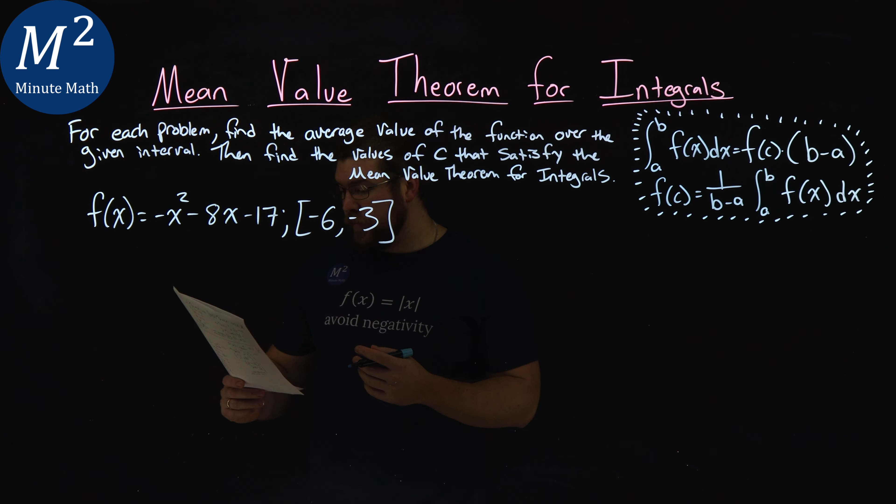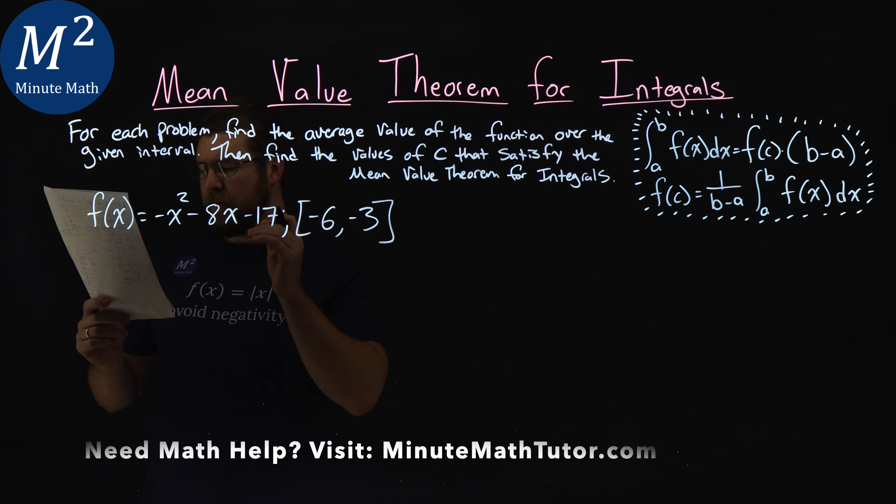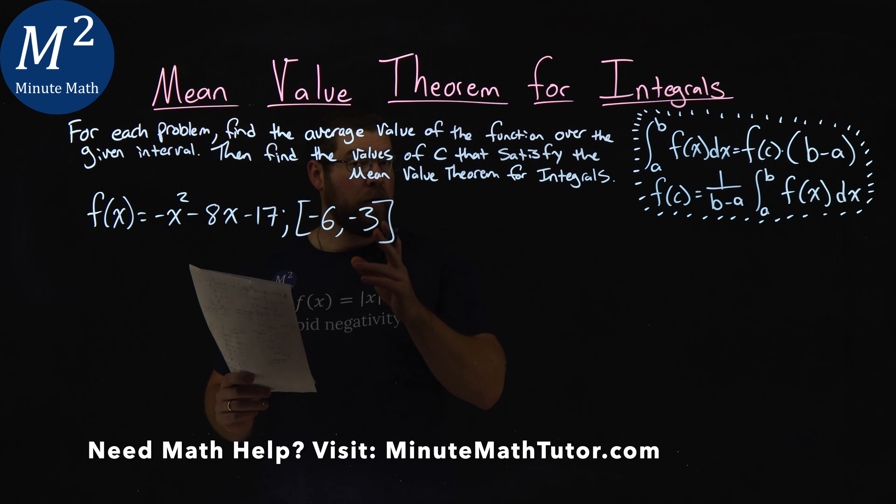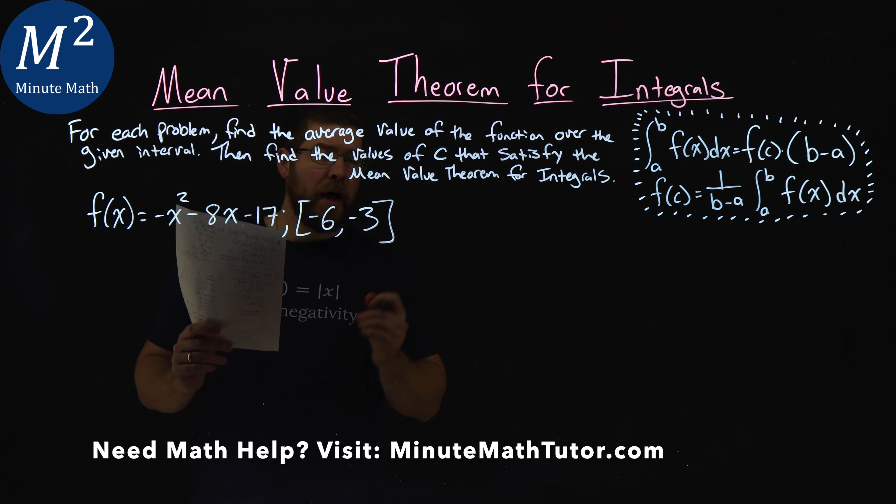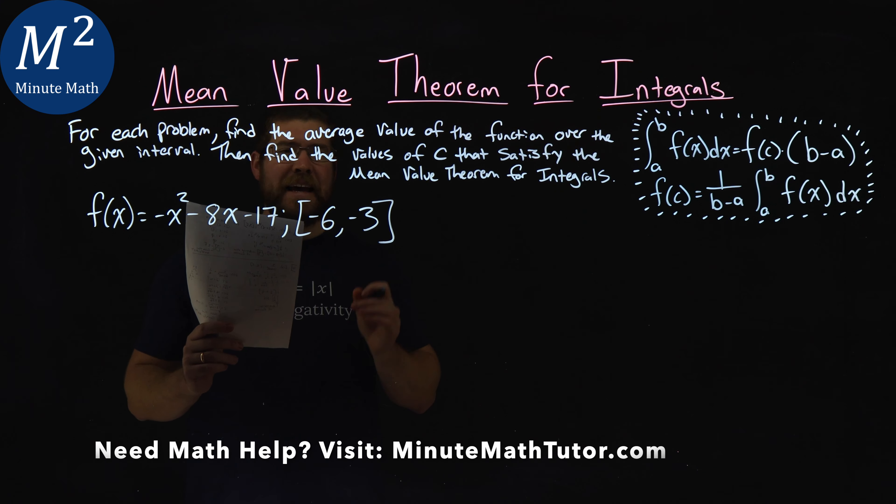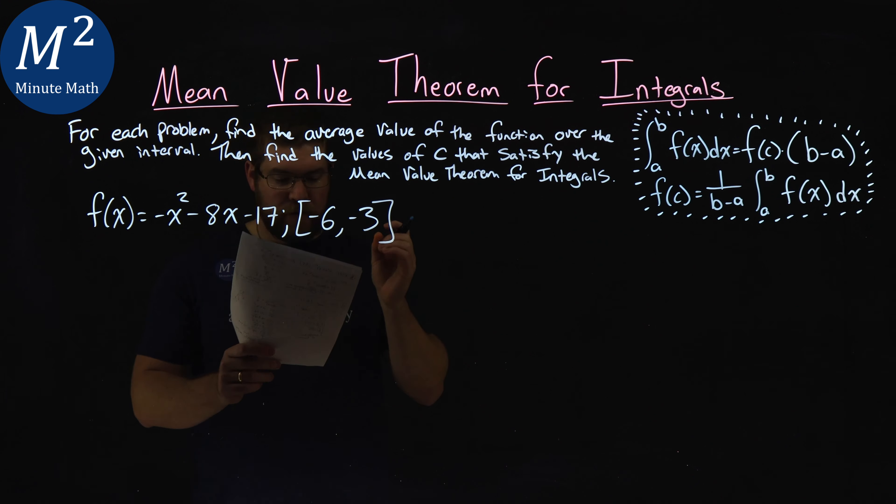We're given this problem right here: f(x) equals negative x squared minus 8x minus 17 on our interval from negative 6 to negative 3. We want to find the average value of the function over this interval and find the values of c that satisfy the mean value theorem.